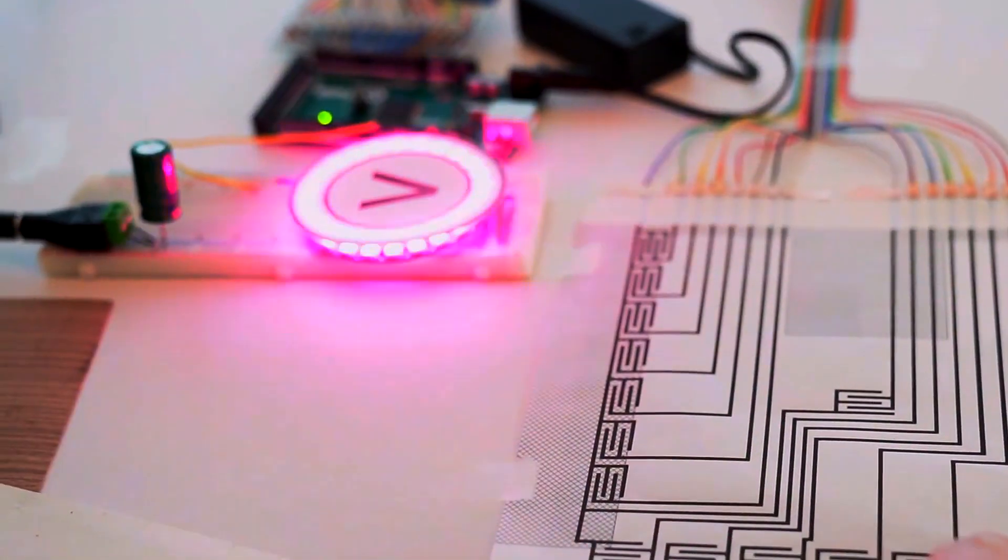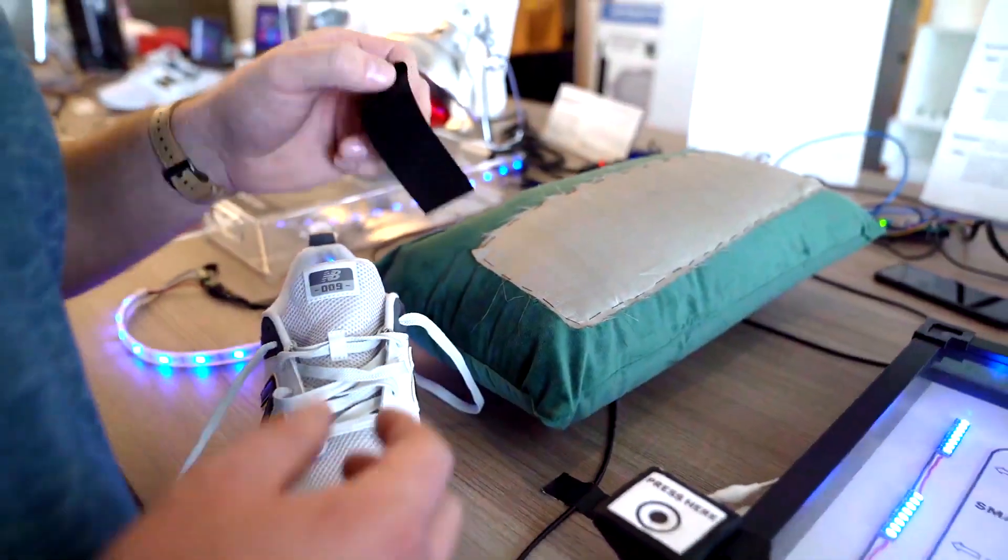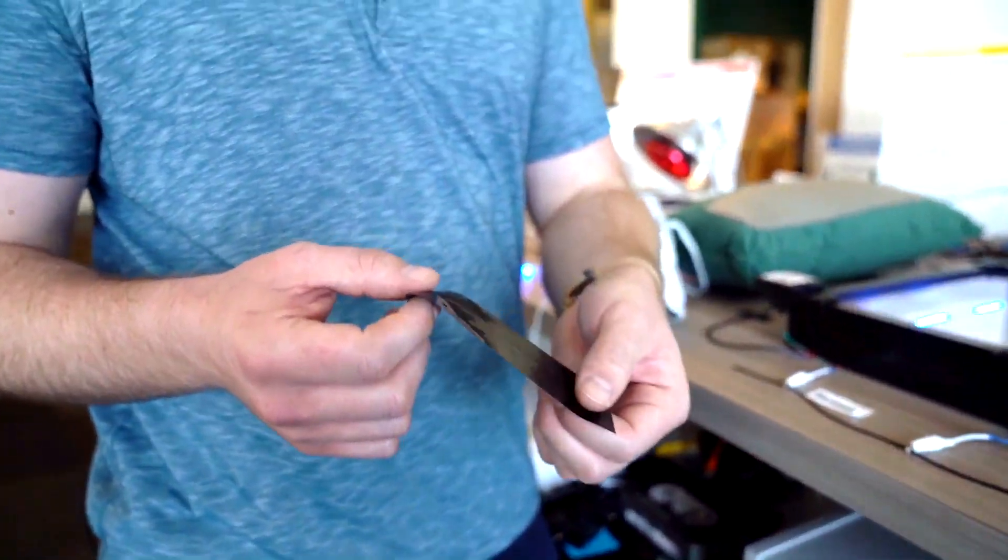But let's start by looking at one specific example. Velostat is a pressure-sensitive film, so when you put pressure on it, the conductivity changes.